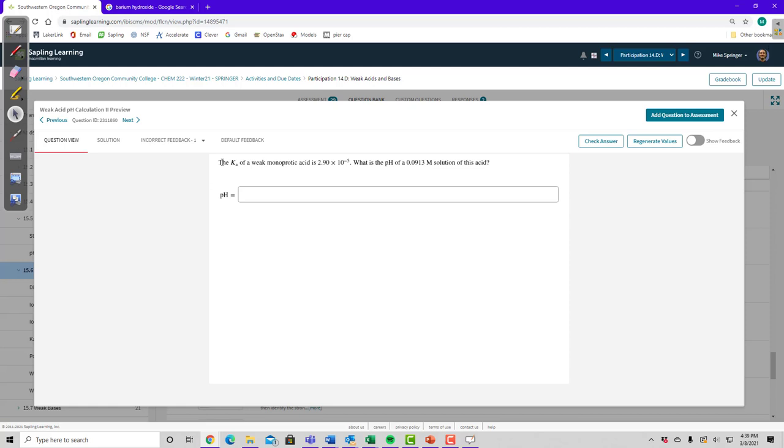Alright, so here's another problem. The Ka of a weak monoprotic acid is 2.9 times 10 to the minus 5. What is the pH of a 0.0913 molar solution of this acid? So we ask ourselves the same question. Is this an acid or base? Well, it says it's an acid. And is it weak or strong? Well, it says it's weak. So this one kind of answers our first two questions for us. We already know that this is a weak acid.